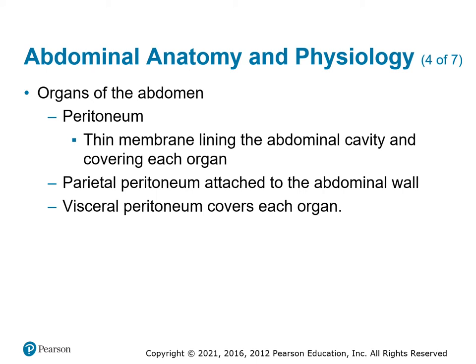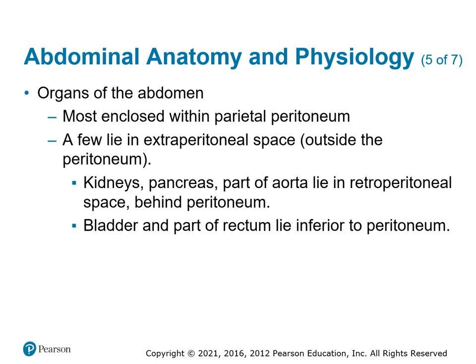You've got the parietal membrane which is attached to the abdominal wall, and the visceral which covers the organs — similar to the lung pleura, where you have the membrane on the inside of the ribs and the membrane on the outside of the lungs. Most of your organs are in the parietal peritoneum. The kidneys, pancreas, and part of the aorta are retroperitoneal — behind that space. The bladder and part of the rectum are inferior to the peritoneum.